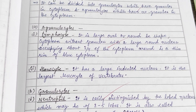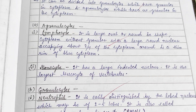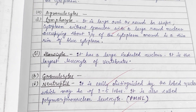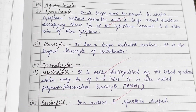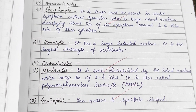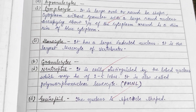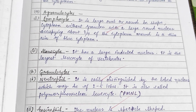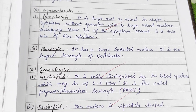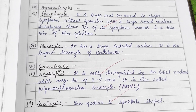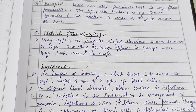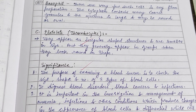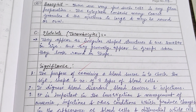The description of the different types of blood cells: WBC is composed of two types — granulocytes and agranulocytes. Granulocytes include neutrophils, eosinophils, and basophils, while agranulocytes include lymphocytes and monocytes.